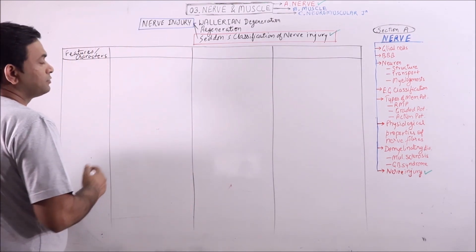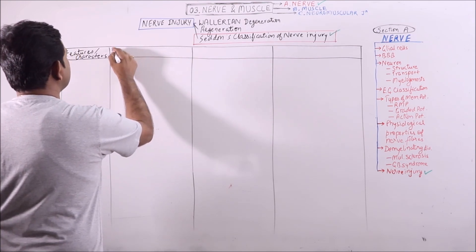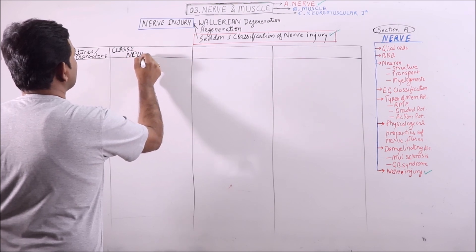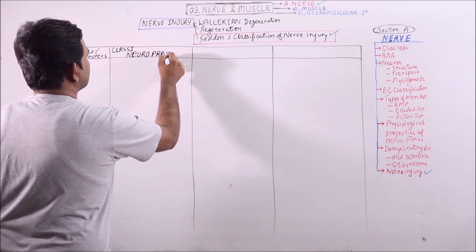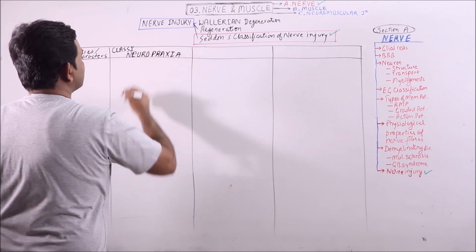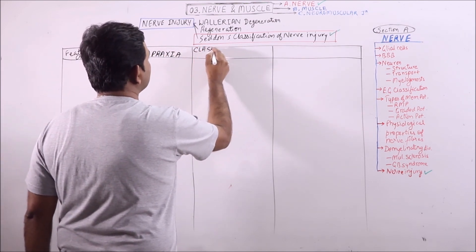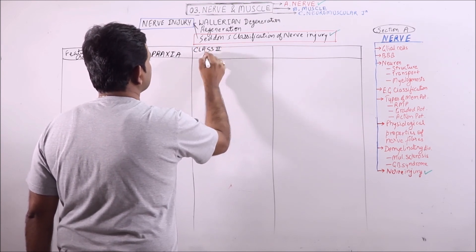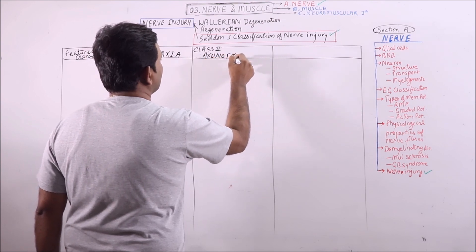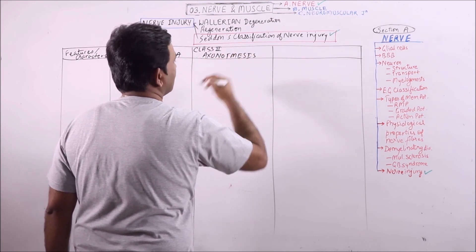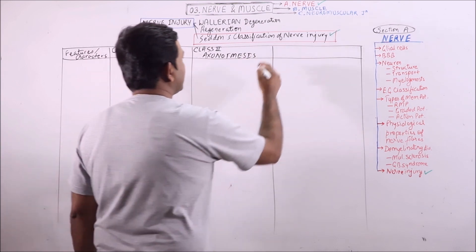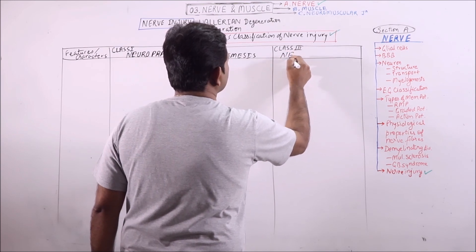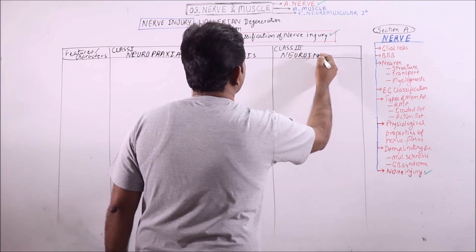According to Seddon's classification of nerve injury, there are basically three classes of injuries. Class one is known as neuropraxia — 'praxia' means to continue. Class two is axonotmesis, where 'tmesis' means to separate, and class three is neurotmesis.